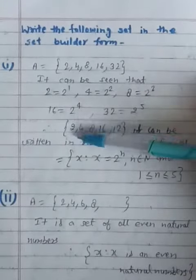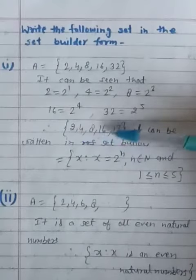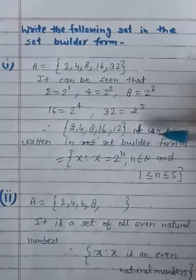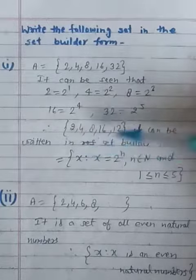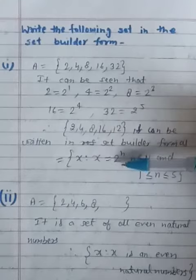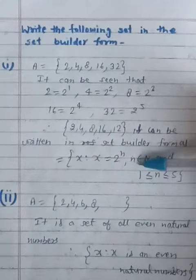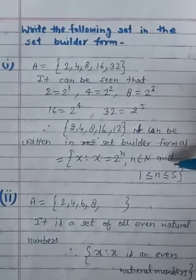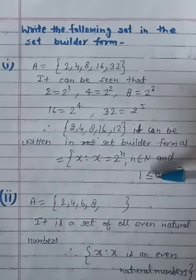Therefore, 2, 4, 8, 16, 32 can be written in set builder form as x such that x is equal to 2 to the power n, n belongs to N, and every n is greater than or equal to 1 and n is less than or equal to 5.